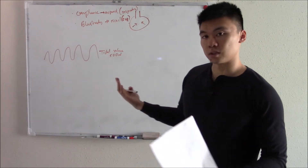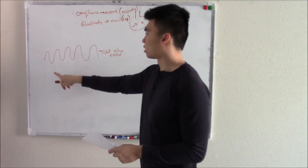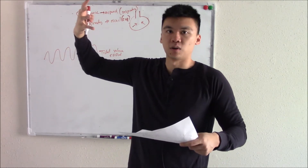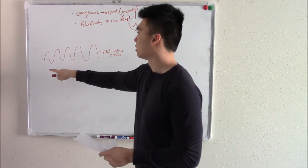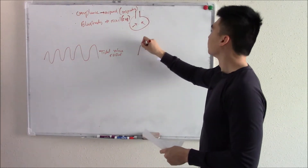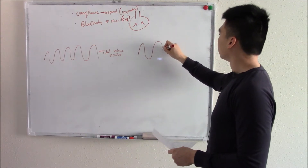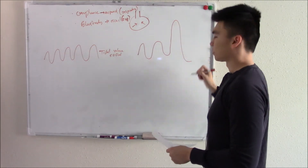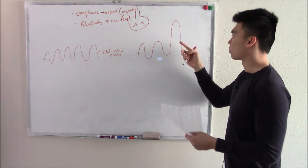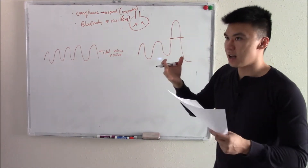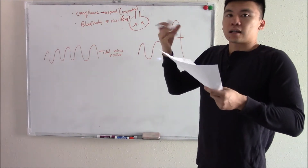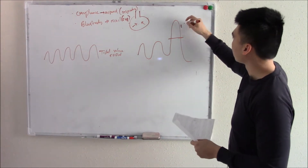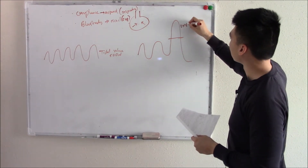Tidal volume is usually about 500 milliliters of air. Now, on your third breath of normal breathing, take an extra deep breath in. Even when you take a normal breath, there's still an ability to take an extra deep breath in. There's still a little reserve we have. We call this our inspiratory reserve volume.